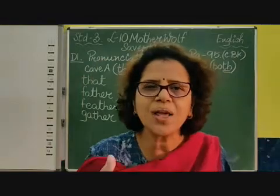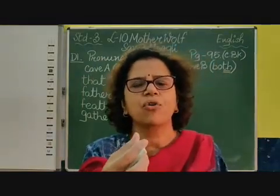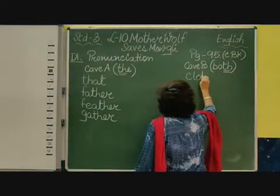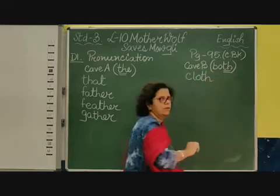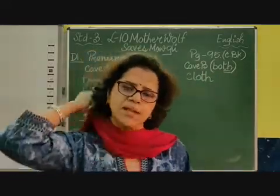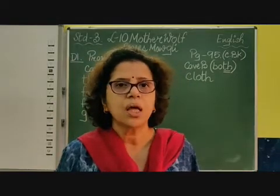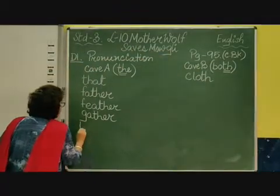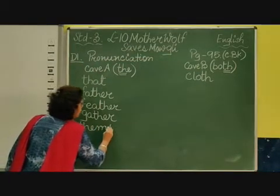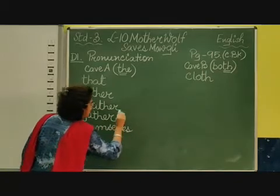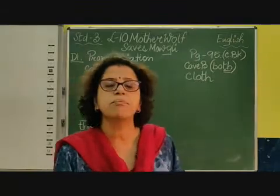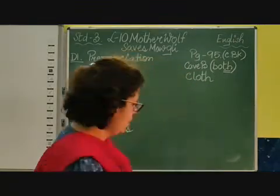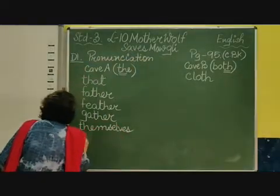Next is 'cloth'. As soon as you say 'cloth', you can see air is coming out of your mouth. 'Cloth' — yes, it will come in the voiced cave, cave B. Coming to 'themselves' — you don't say 'themselves' with a hard TH. You say 'themselves', so it will come in cave A. The next word is 'breathe'. We don't say 'breathe' hard. We say 'breathe', so it will come in cave A as well.